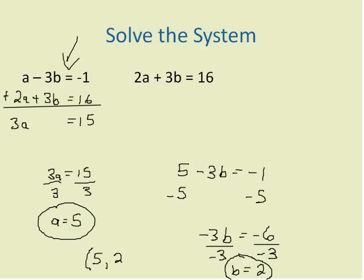So my final location or solution for this is that these two lines will cross at the point a equals 5 and b equals 2. And that's the solution for this system. A equals 5, b equals 2. That's the solution for this system.